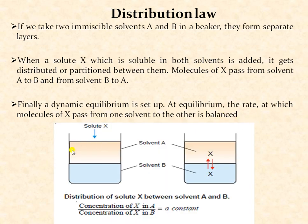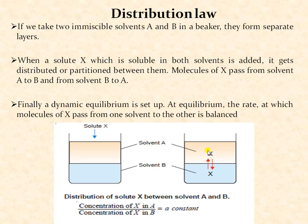Looking at this diagram: this is solvent A, this is solvent B, and when you add solute X into these immiscible solvents, there is a partition of X between solvent A and solvent B. Solute X is distributed in these two solvents, and the concentration of this solute X in solvent A and solvent B is constant. The ratio of the concentration of solute X in solvent A to that in solvent B is constant.